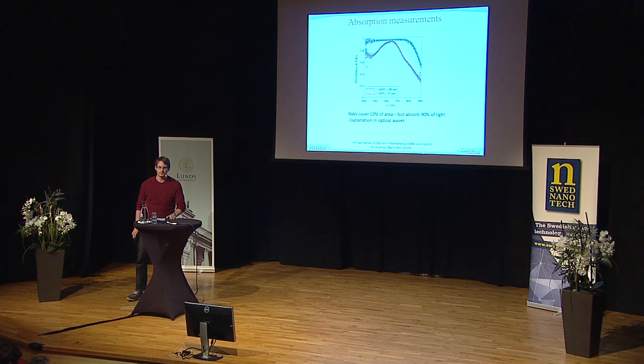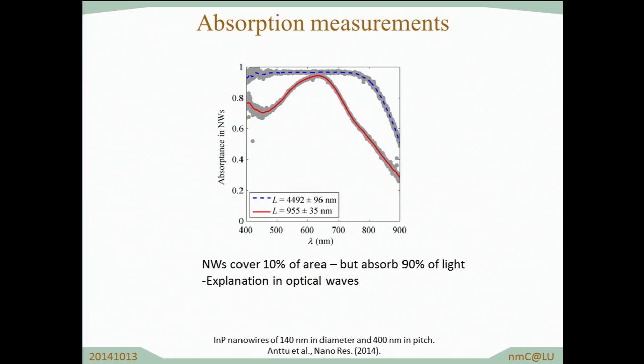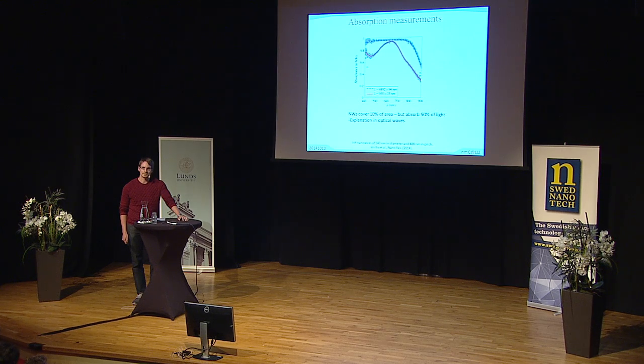When we do this, you see the results here for two different samples: shorter nanowires shown as the red curve, and longer nanowires shown as the blue curve. We indeed reach absorption close to 100%, even though these nanowires cover only 10% of the substrate — or 10% of the volume in this case. To understand this we need to use optical waves, because our common sense of how light should interact is simply not enough.